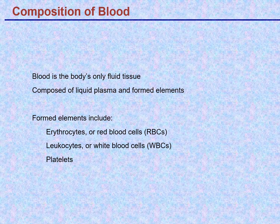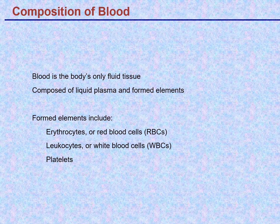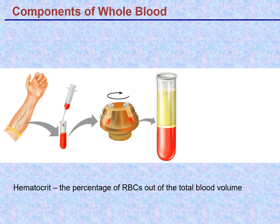The formed elements include the erythrocytes, or red blood cells (RBCs); the leukocytes, or white blood cells, which include both myeloid and lymphoid cells; and platelets. Platelets are derived from small pieces of a large cell called the megakaryocyte — tiny bits bleb off, taking some cell membrane and cytoplasm to form many very tiny platelets that are involved in the coagulation of blood.